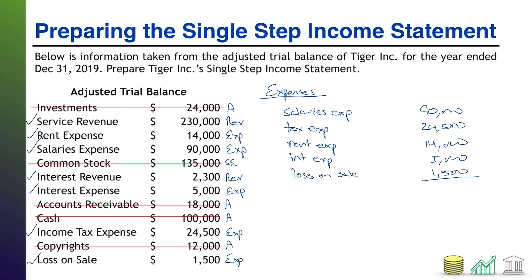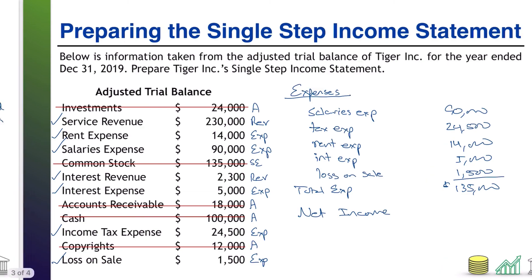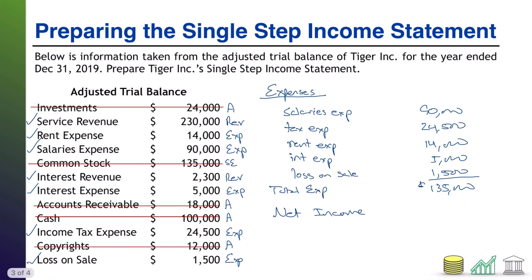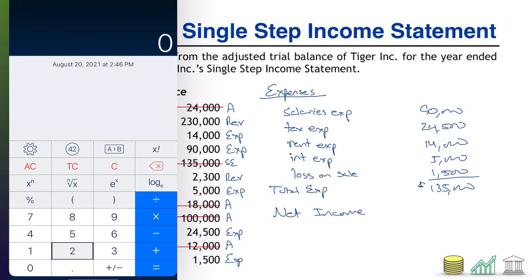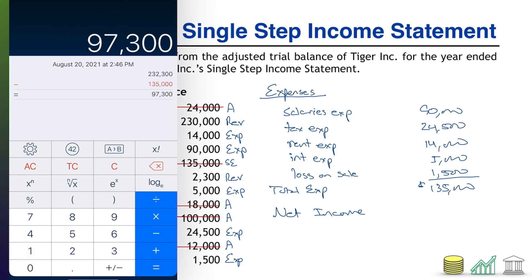Tallying up the expenses: $90,000 plus $24,500 plus $14,000 plus $5,000 plus $1,500 gives us $135,000 in total expenses. Then our final line is net income. Taking our $232,300 in revenue minus $135,000 in expenses — using the calculator: $232,300 minus $135,000 — that gives us net income of $97,300.